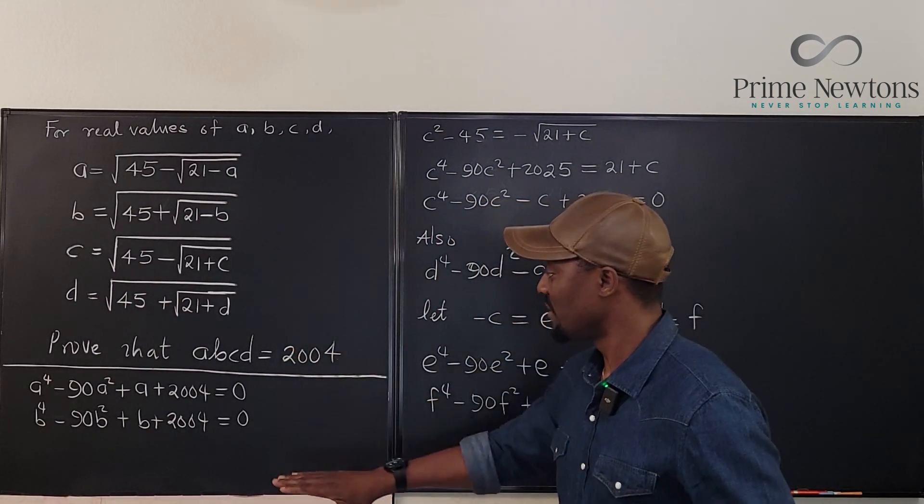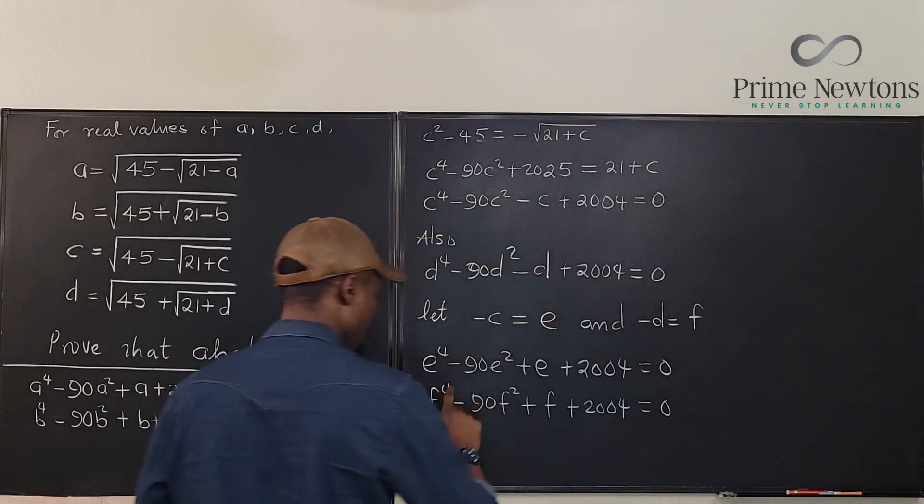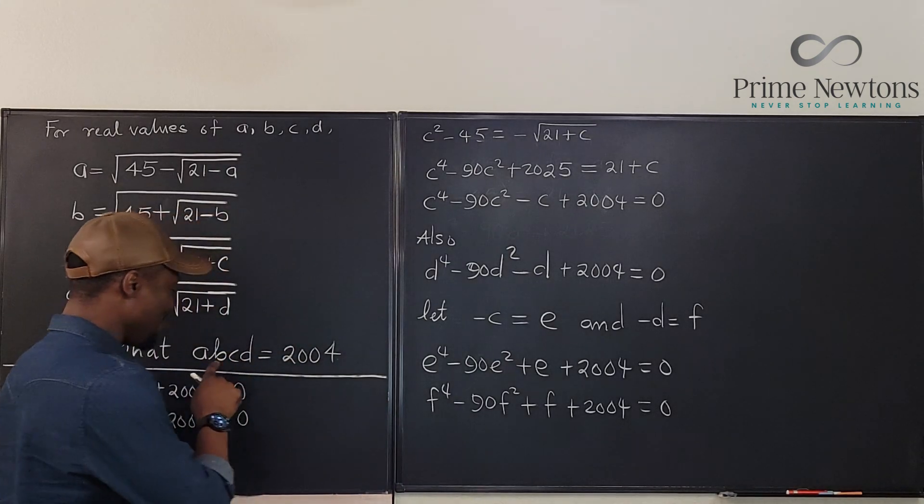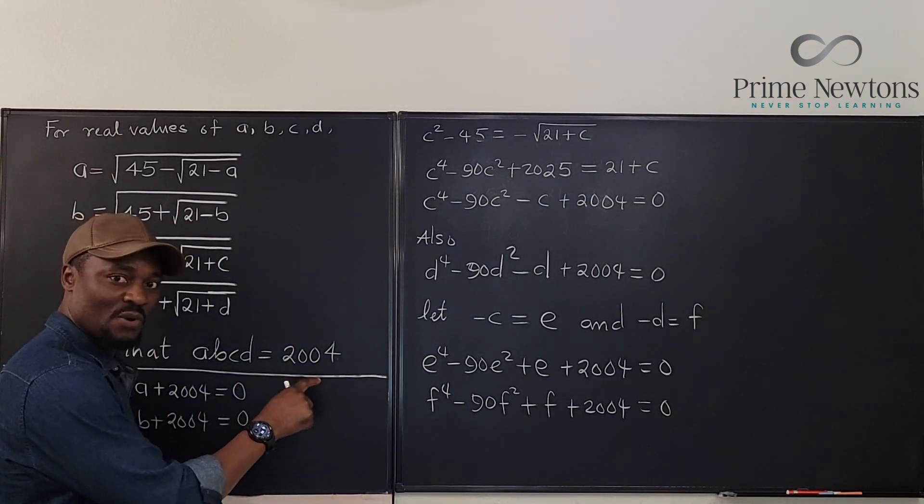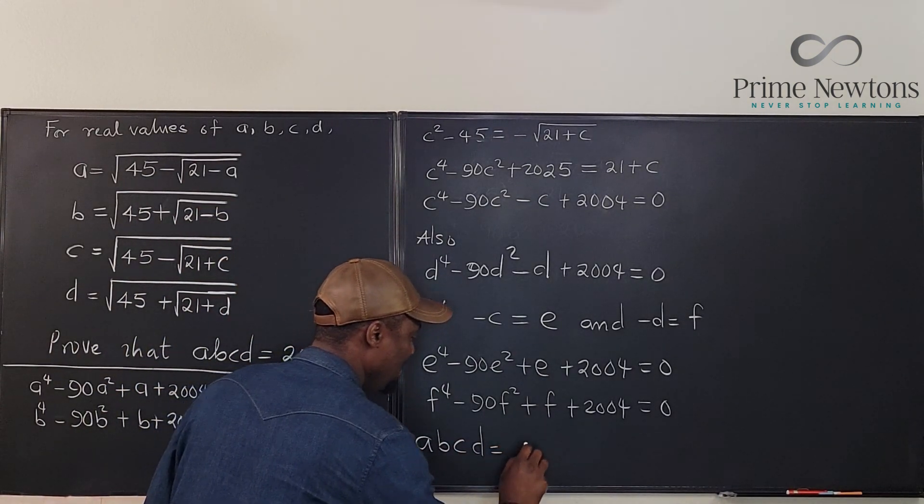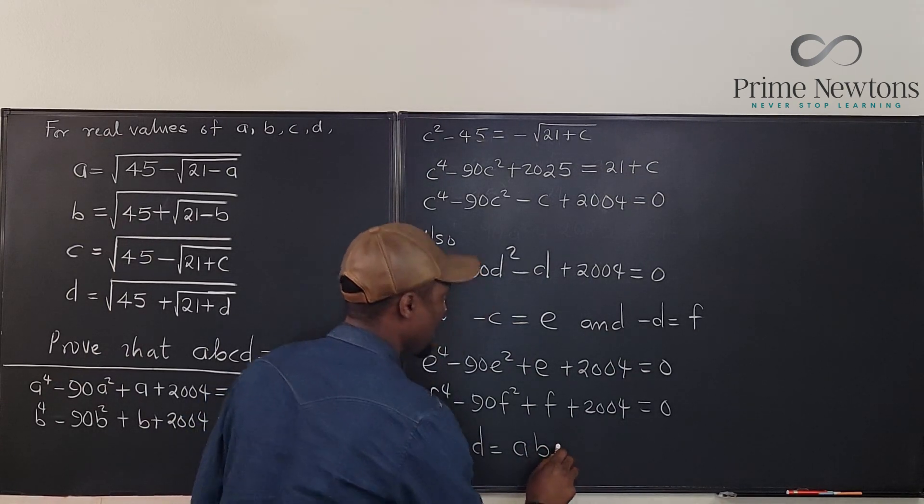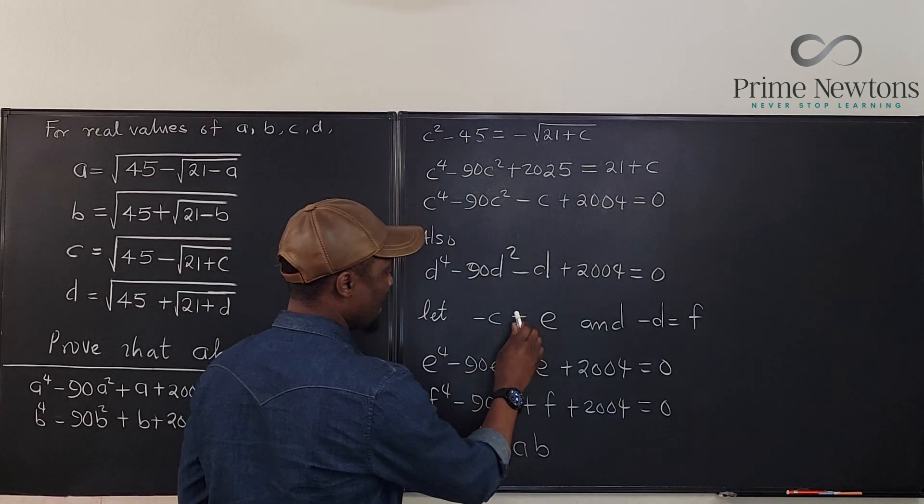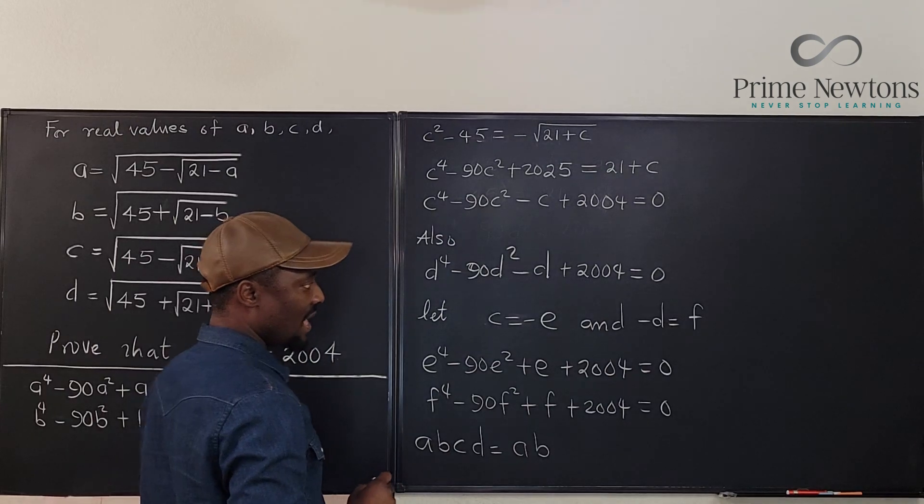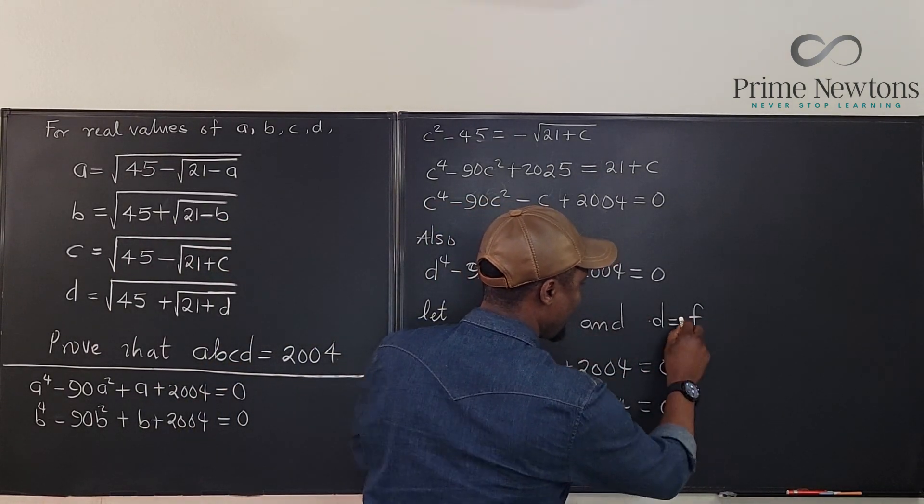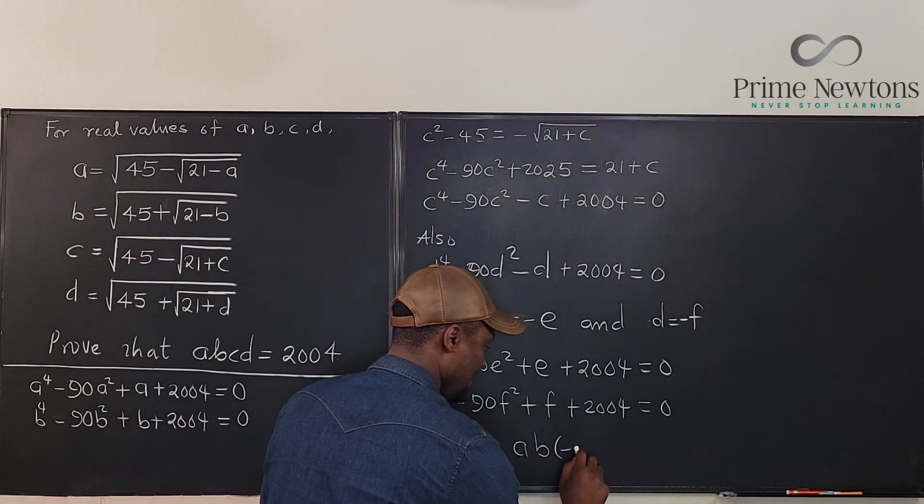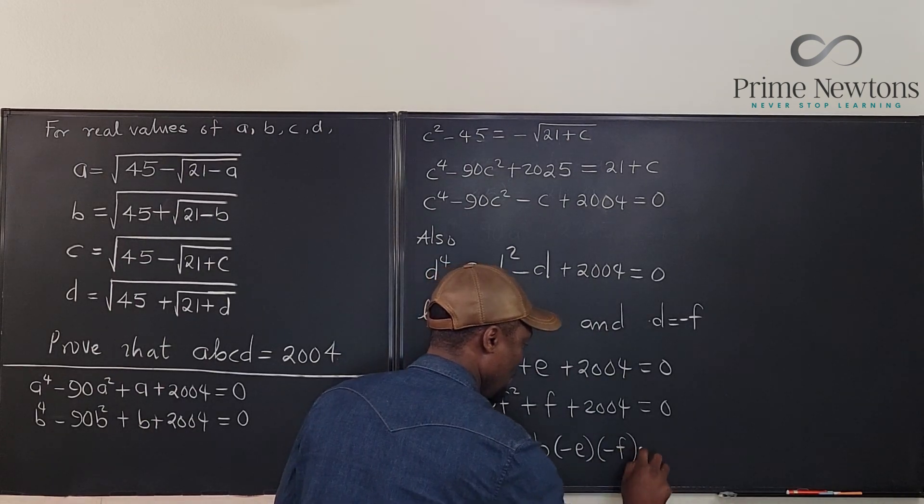So clearly everything we are dealing with comes from the same polynomial. Did you see that? And remember that what we're looking for is to prove that the product of these will be 2004. Well, what we're looking for is A times B times C times D will be the same thing as A times B times...